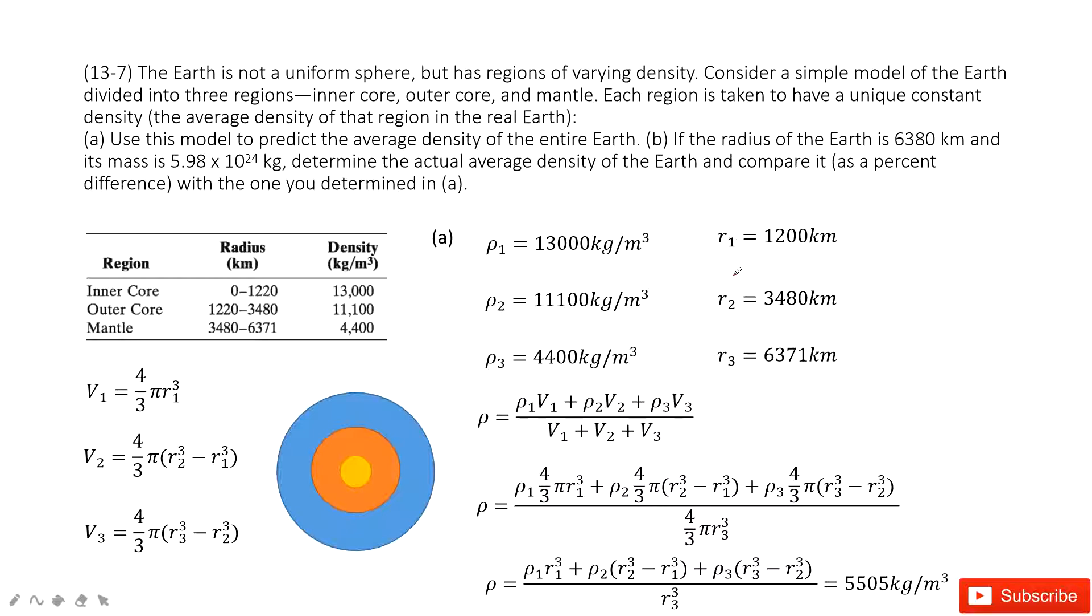So for volumes, you can see the radius is given, so the volume for v1, this part is just this equation. And the second layer is this orange part. You can use this orange part as r2 cubed minus r1 cubed. And also the v3 is r3 cubed minus r2 cubed.